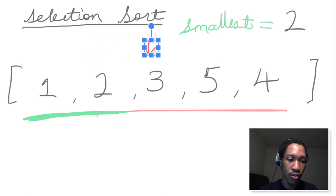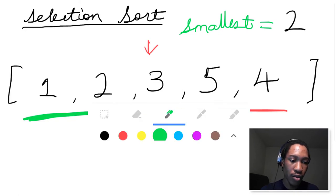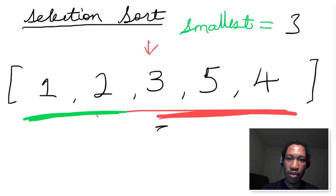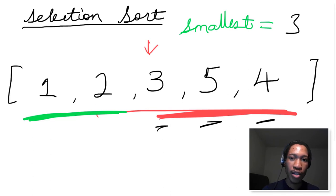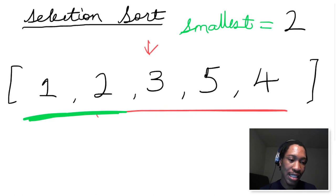We move our pointer to the next element, 3, and we look for the smallest number in this subarray to swap with 3. Current smallest is 3. Is 3 smaller than 3? No. Is 5 smaller than 3? No. Is 4 smaller than 3? No. So we know for sure that 3 is the smallest element in this subarray and it's already in its rightful position. So we do nothing, and we safely extend the length of our sorted array to include 3.